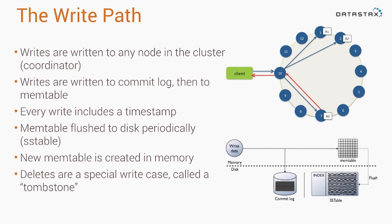You can imagine the data getting written to the memtables — eventually memory is going to run out, so we have to take those memtables and flush them to disk. Cassandra does this behind the scenes asynchronously. It's a whole bunch of sequential I/O, basically taking the in-memory memtable and serializing it to disk into something called an SSTable.